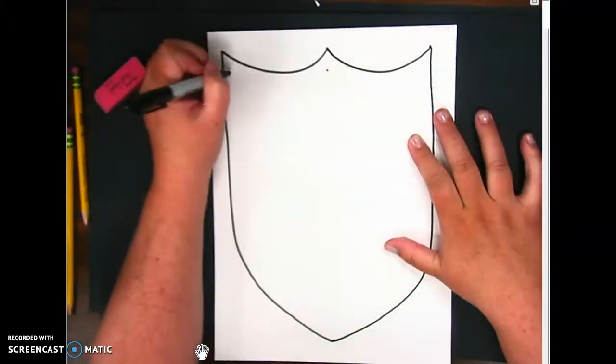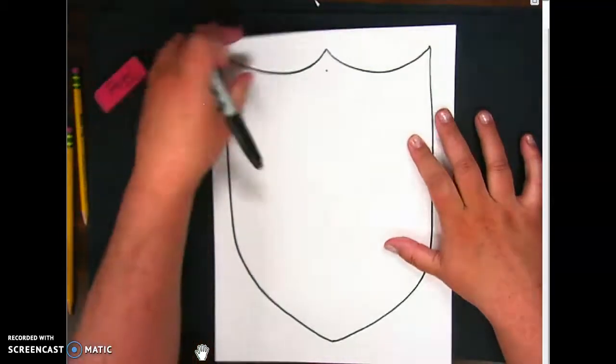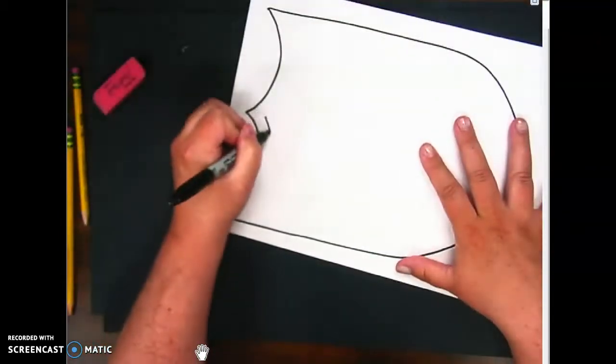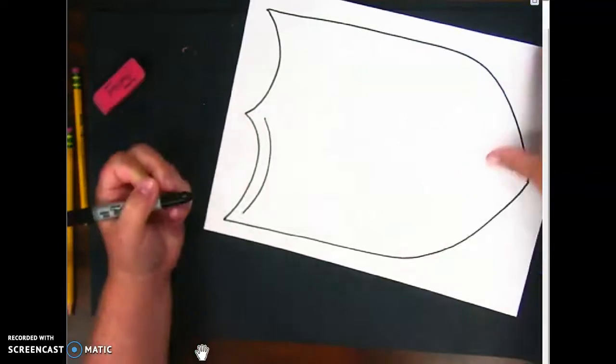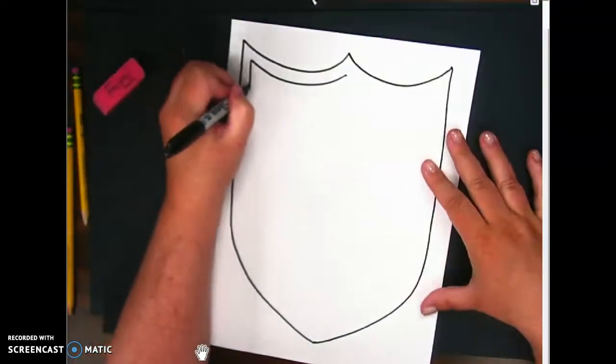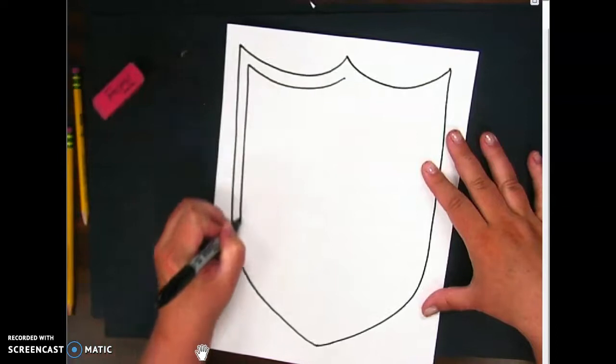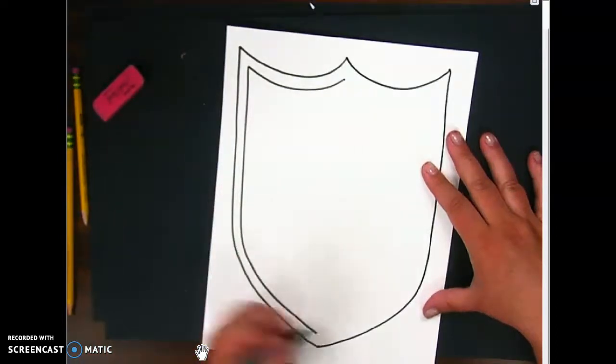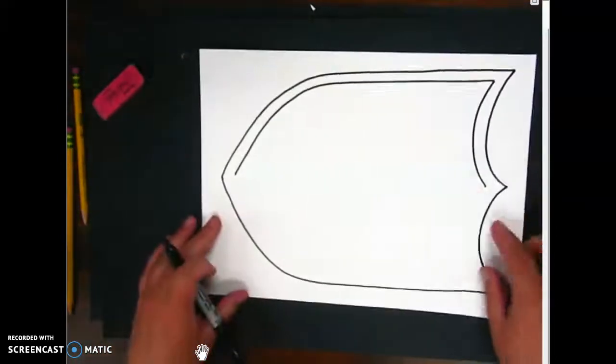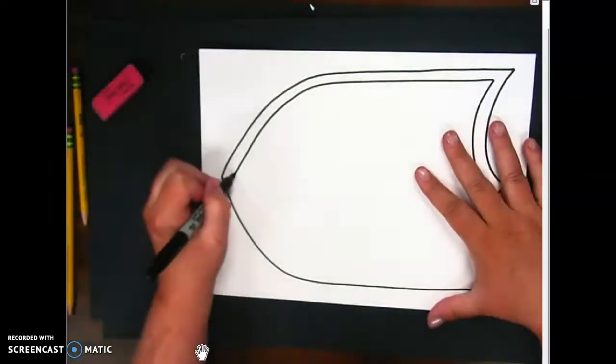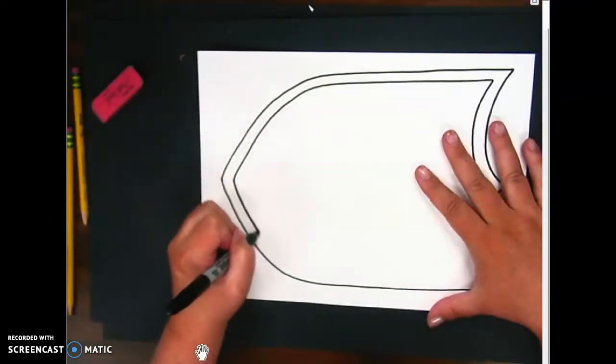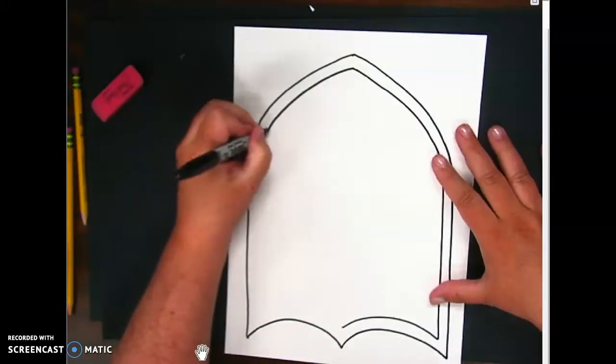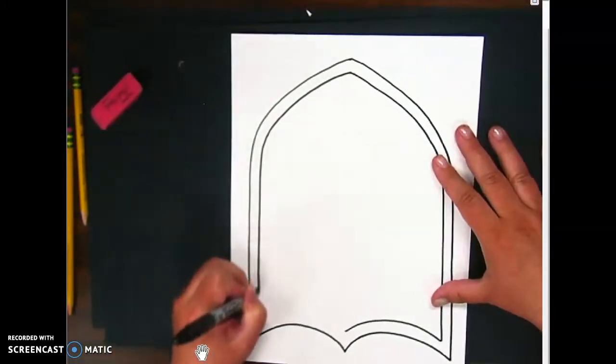The next thing that we're going to do is make a frame line in the center, and not too thick. We still have other things we're going to put inside of this shield. Notice that I'm pulling my marker towards me. I turn my paper while I work. Like I said, I'm going really fast because I've had some practice. You should be taking your time going slowly.